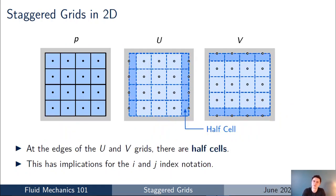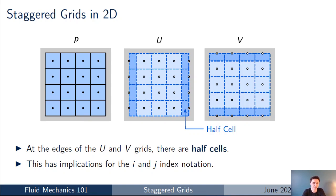There's an interesting implication of this staggering. Because we shift the U grid left-to-right and the V grid up-and-down, you end up with half cells at the ends of these grids. For the U-momentum grid, shifting the original four-cell grid half a unit to the right means the final cell on the right becomes half a cell thick, and a new half-cell is inserted on the left. We see similar half cells at the top and bottom of the V-momentum staggered grid in 2D.